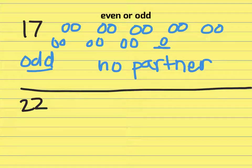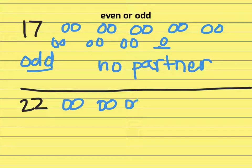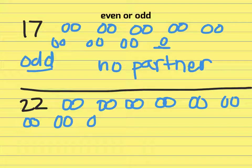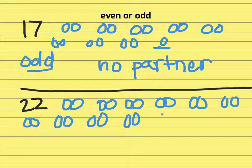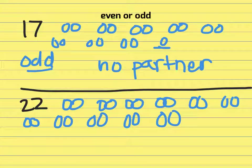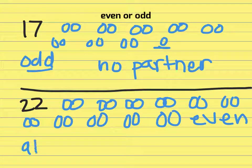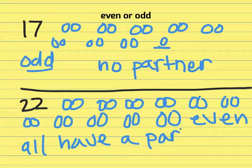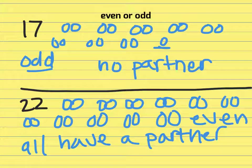I'll go ahead and do the same thing for the number 22. So I'll draw out 22 circles in partnerships. 1, 2, 3, 4, 5, 6, 7, 8, 9, 10, 11, 12, 13, 14, 15, 16, 17, 18, 19, 20, 21, 22. They all have partners. 22 is an even number. And the reason is that they all have a partner. So students can show it that way. It's really easy.